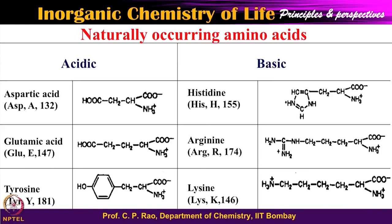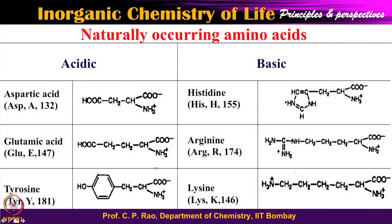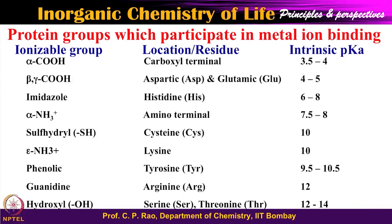We have now seen amino acids based on their side chains: non-polar with alkyl groups, polar with dipoles, and acidic and basic charged types. Some side chains are ligating centers capable of binding to metal ions, and some cannot. Please note that we are referring only to the side chains, not the main chain, because the alpha-carboxylic and alpha-amino groups are utilized in the formation of the peptide bond.